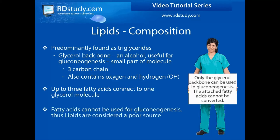Since its size is quite small as compared to the rest of the molecule, triglycerides are considered a very poor source for gluconeogenesis. The fatty acid chains cannot be used in this process.